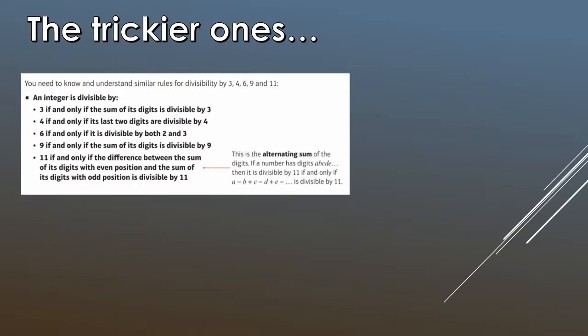So let's look at some other rules. These are the tricky rules, and you have to be able to show, understand the rules, follow divisibility by 3, 4, 6, 9 and 11. So quite a few in total. For 3, you have to check whether the sum of the digits is divisible by 3.